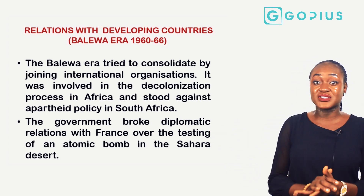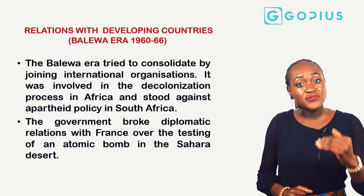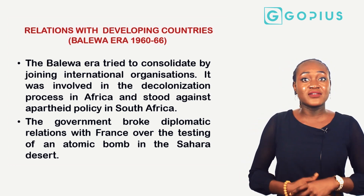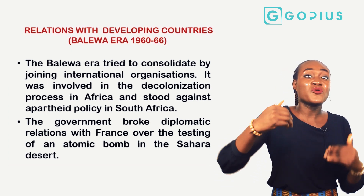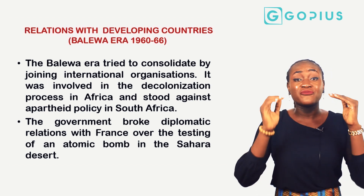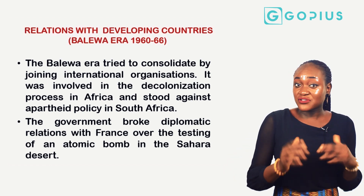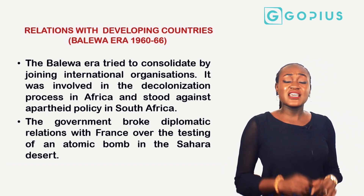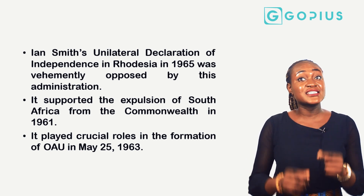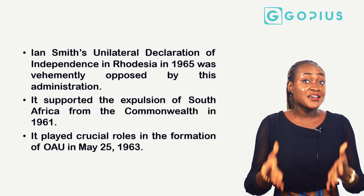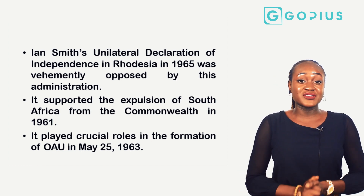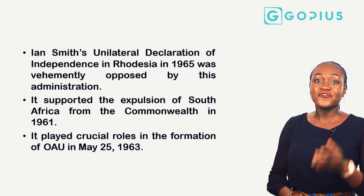The Balewa administration was involved in the decolonization process and led the struggle against colonialism and apartheid in South Africa. The government broke diplomatic relations with France because they tried to test an atomic bomb in the Sahara Desert, which would have caused great loss of life. The administration also opposed Ian Smith's unilateral declaration of independence in Rhodesia in 1965, supported the expulsion of South Africa from the Commonwealth in 1961, and played crucial roles in the formation of the Organization of African Unity in 1963.